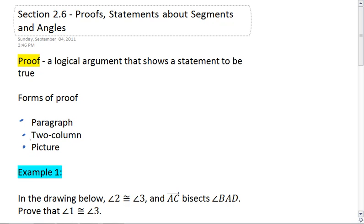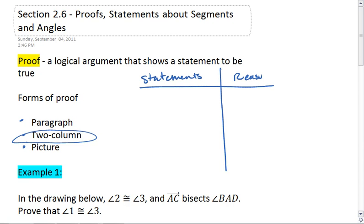The form we're going to be using most often is the two-column proof, which you saw in the previous videos for section 2.5. The columns are: the statements column, where we write our mathematical statements, and the reasons column, where we give the reasons or justifications for each statement.